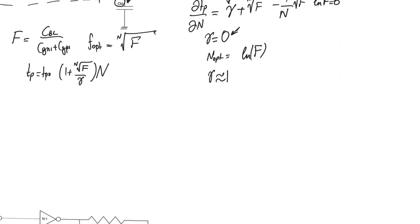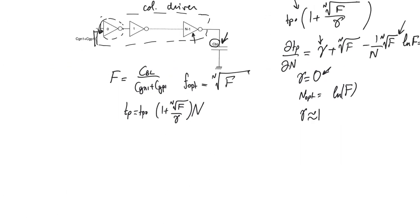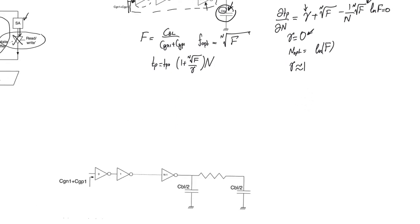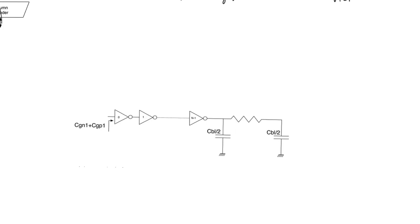One more complication: we have been assuming the bit line is a lumped capacitor, but in many cases it is actually an RC circuit. In module 13 we will discuss in detail how to deal with RC wires — wires with significant resistance. One practical approach is to calculate the total wire resistance R_wire and model the wire as a single pi section, with half its total capacitance at the beginning and half at the end.